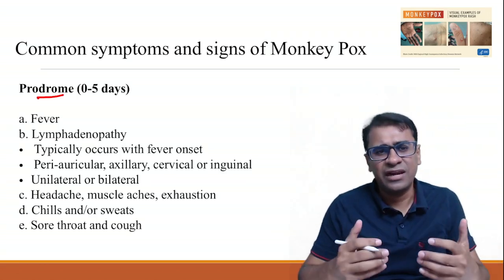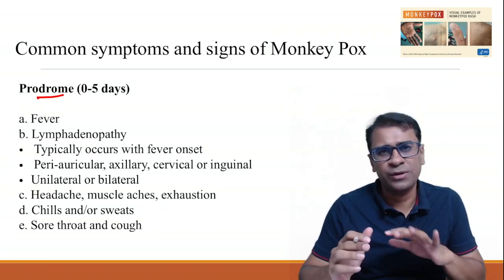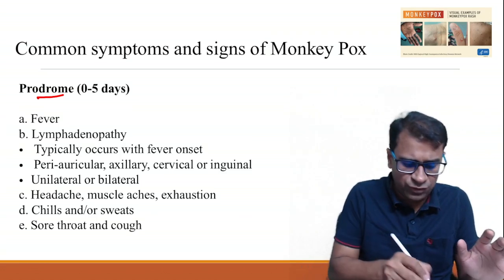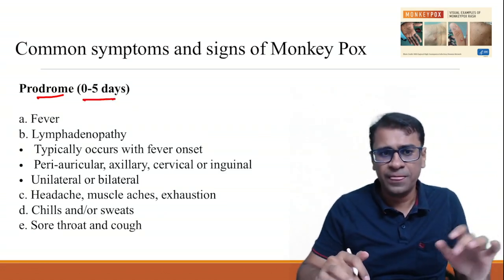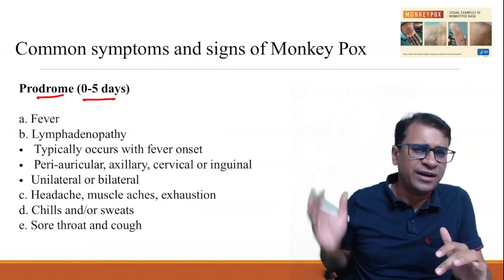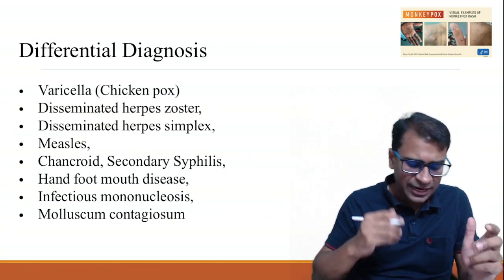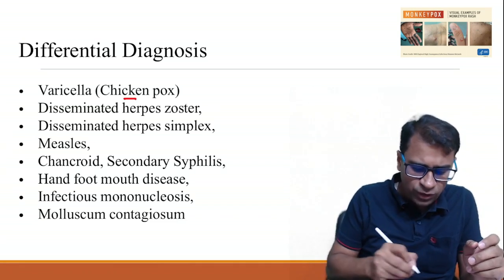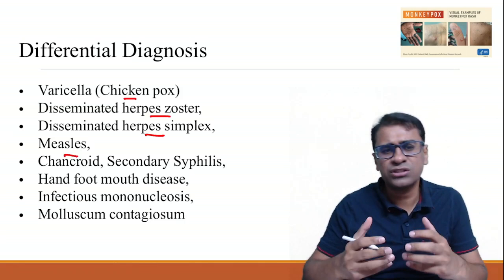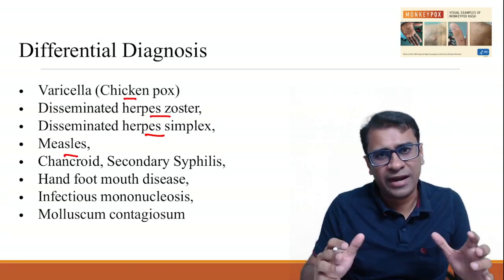The prodromal symptoms include fever, lymphadenopathy, headache, chills, rigors, and sore throat or cough — basic prodromal symptoms which last around 0 to 5 days. The differential diagnosis based on these findings includes common cold, chickenpox, herpes zoster, herpes simplex, measles, and other viral exanthems which can lead to a rash-like state in a patient.